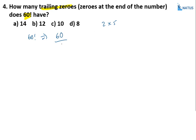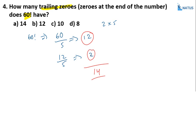Calculate the power of 5: divide 60 by 5 to get quotient 12. Since 12 > 5, divide 12 by 5 to get quotient 2. Since 2 < 5, stop here. Add the quotients: 12 + 2 = 14. So 14 is the answer; option A is correct.